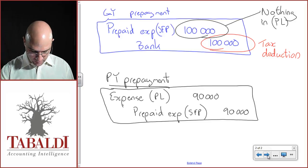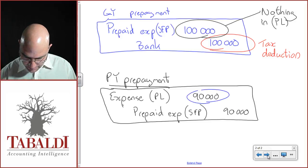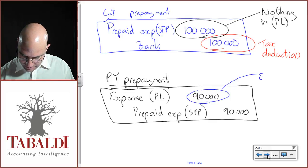So therefore the PBT, profit before tax, has not been affected. In the following year, however, you now have a deduction, an expense that will reduce profit before tax.